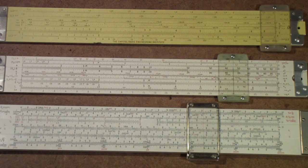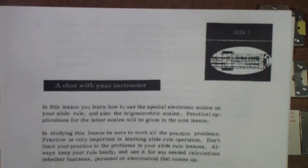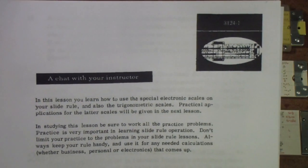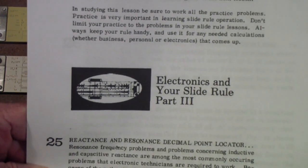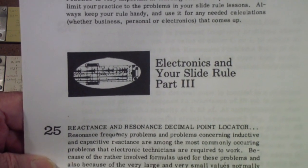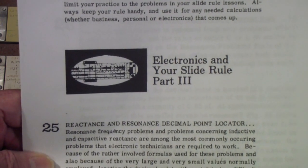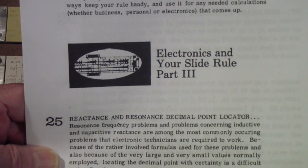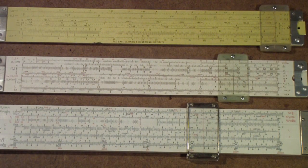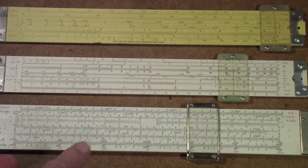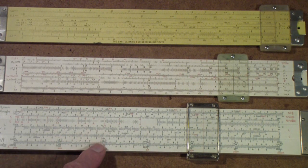The second source is a set of lessons published by the Cleveland Institute of Electronics — I have part three and part four here, and you can find these at the RF Cafe. And then finally, there is a set of instructions on the International Slide Rule Museum's website that has the instructions for the 266 and talks about those scales.